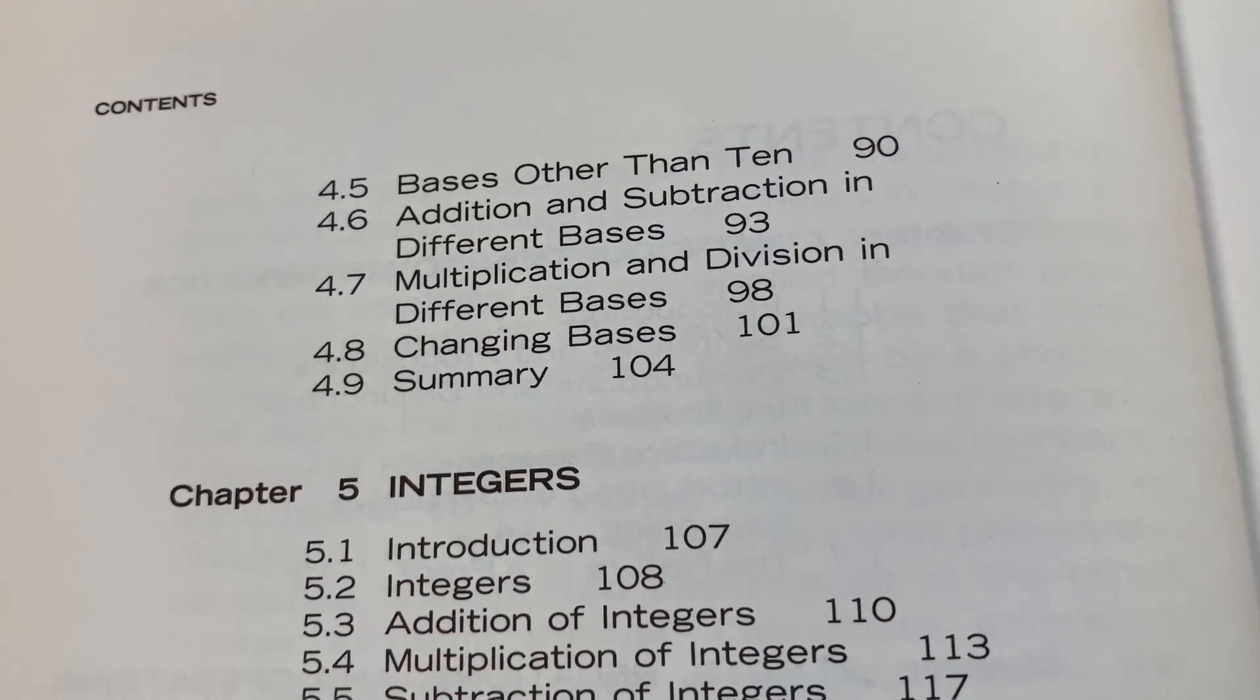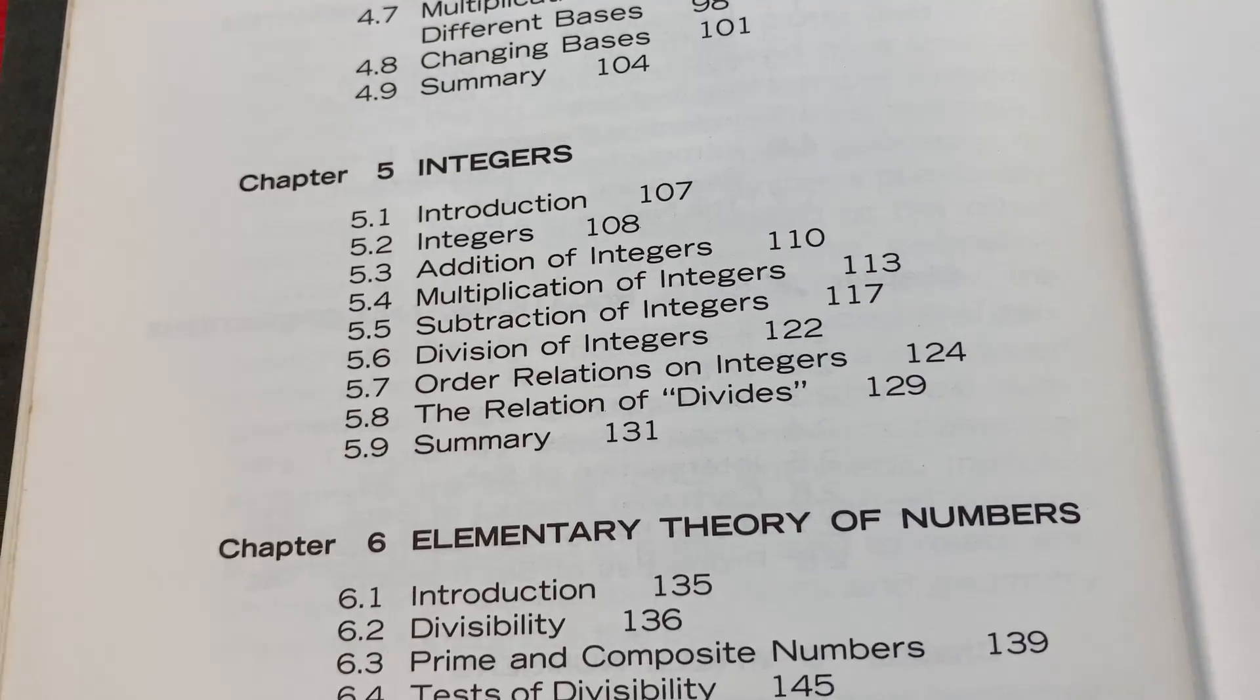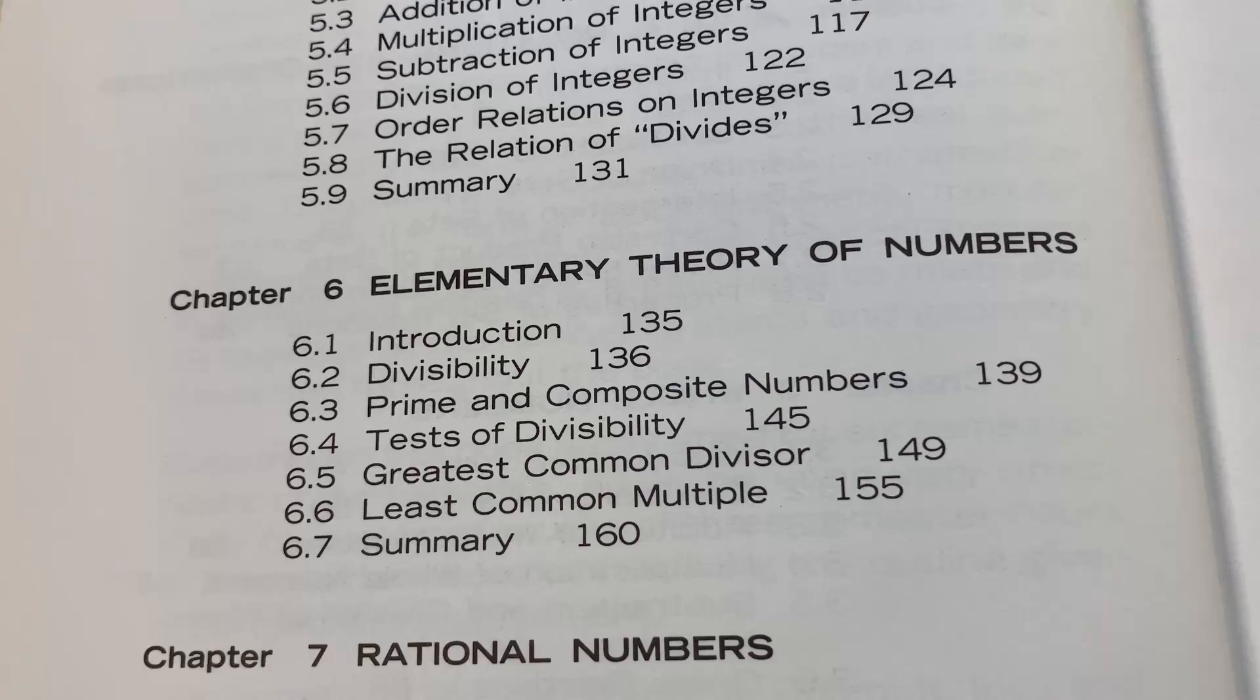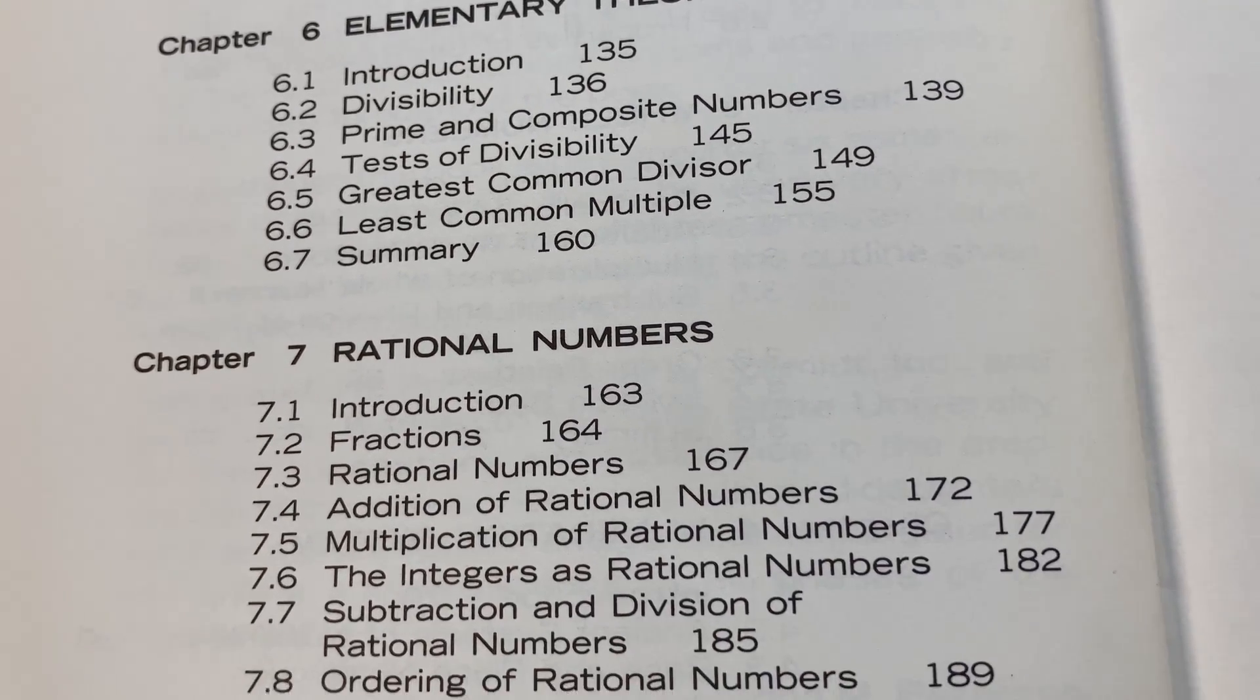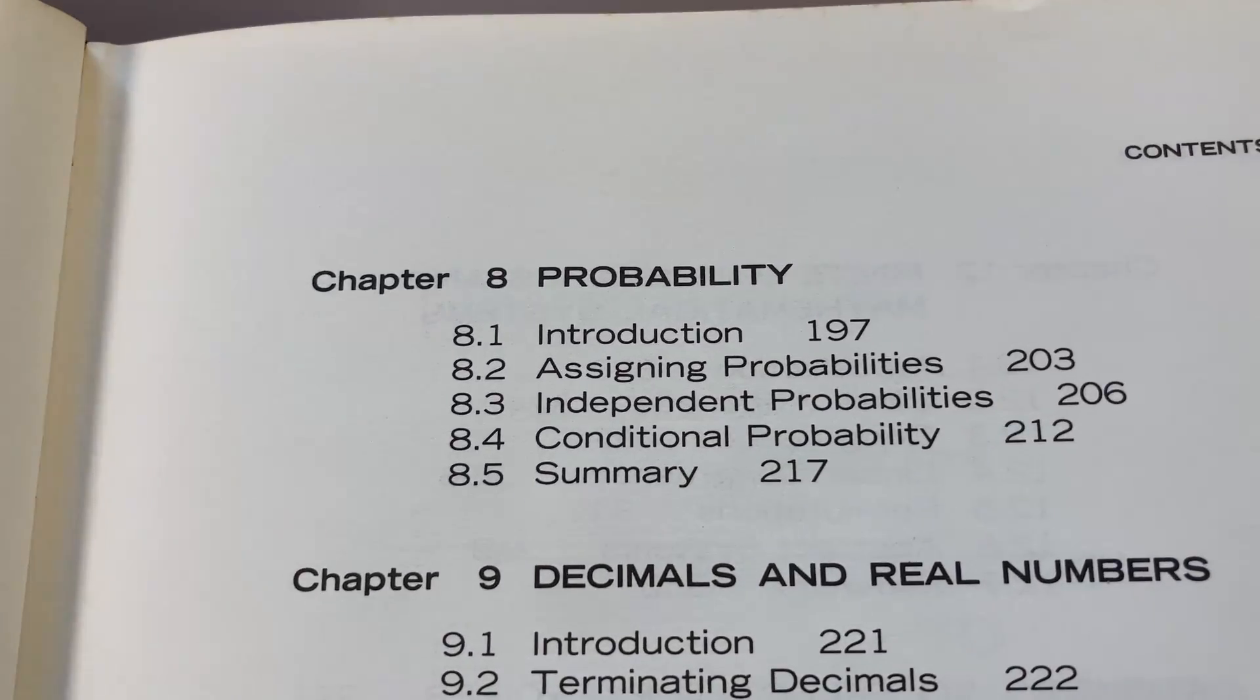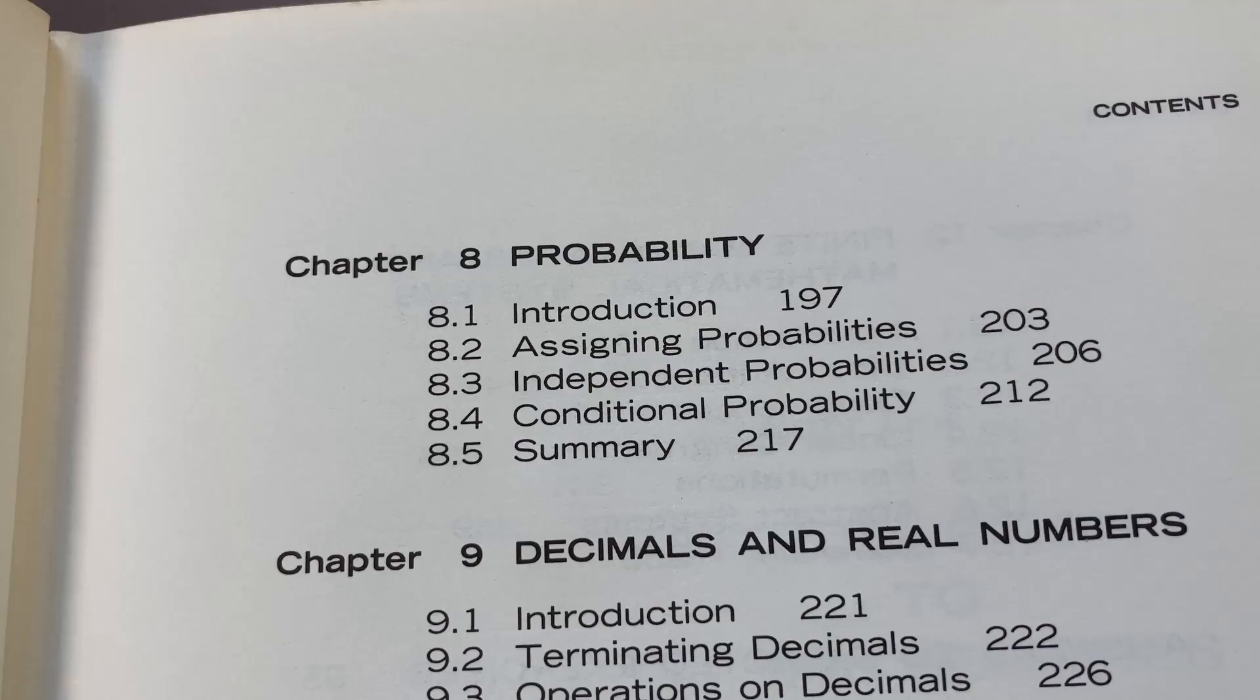Bases other than 10, different bases, changing bases. Integers, an entire chapter on integers. Chapter 6 is on elementary theory of numbers. We have a little bit of number theory in the book. Rational numbers, and then we have some probability. So if you were to take a class in college today in statistics, you would see some of these topics.